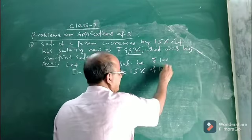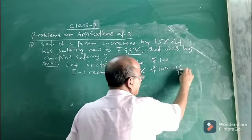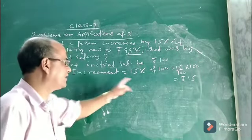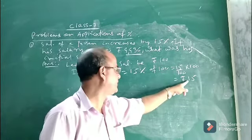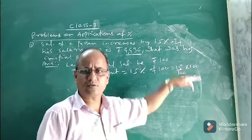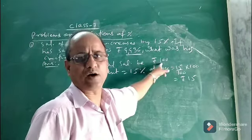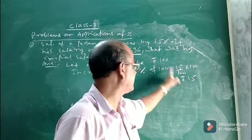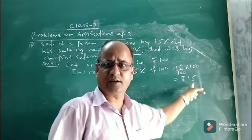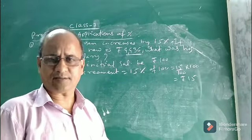So that means it is 15 percent of 100, which is 15 by 100 into 100, and that will be 15 rupees. So the increment is 15 percent, meaning it is just rupees 15 if the initial salary is 100. Now if the initial salary is 100 rupees and the increment is 15 rupees, we have to add this increment to the initial salary to get the new salary.